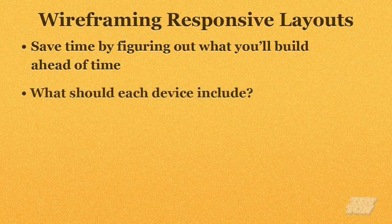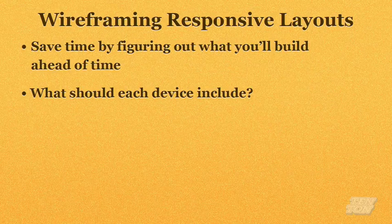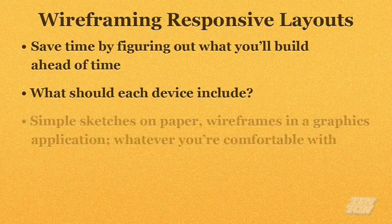Now we want to ask ourselves: what should each device layout include? We've determined that we're going to have three device layouts — a smartphone layout, a tablet layout, and a desktop layout, or small, medium, and large layouts. Should all the layouts include all the layout components? Or should we be removing components perhaps from the smartphone device, or minimizing some of the other layout components for the tablet device?